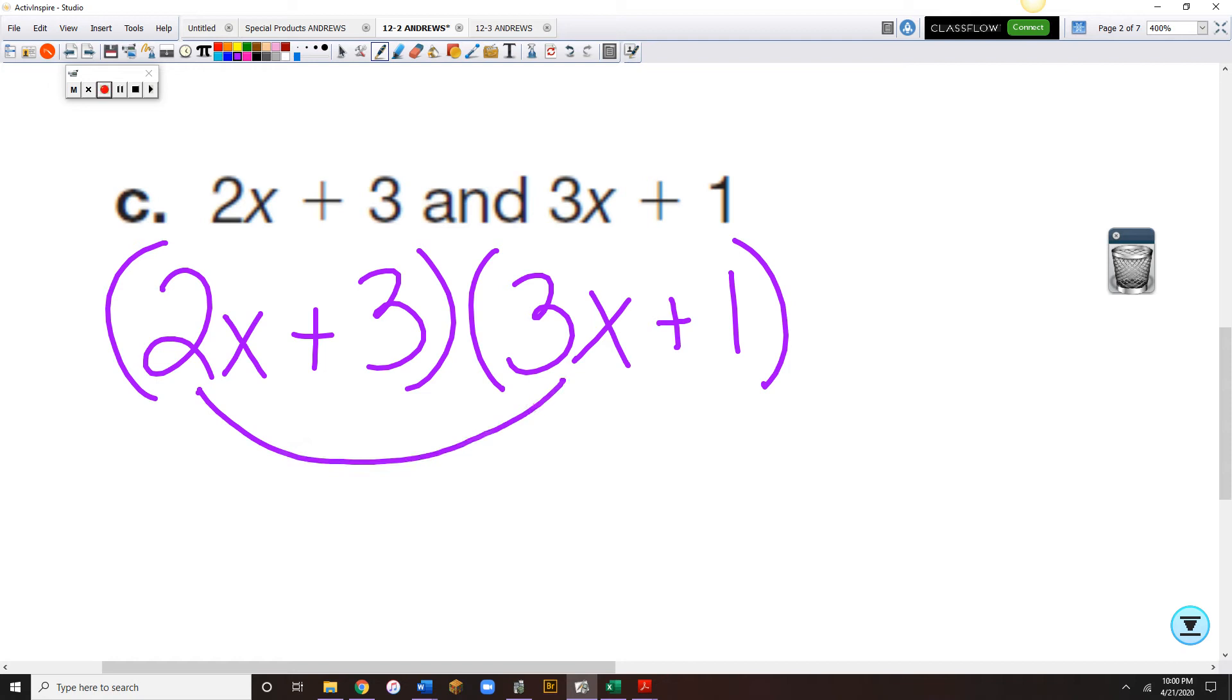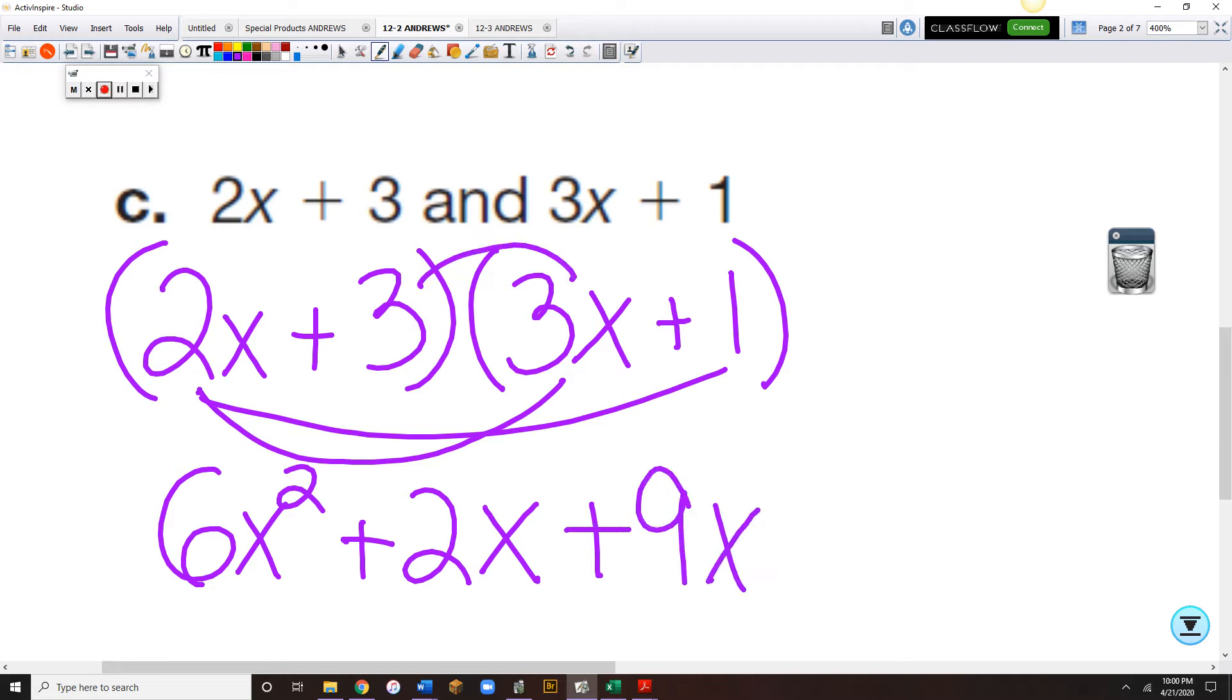So we've got 2x times 3x. And that's 6x squared. 2x times plus 1 is plus 2x. 3 times 3x is plus 9x. And 3 times 1 is plus 3.